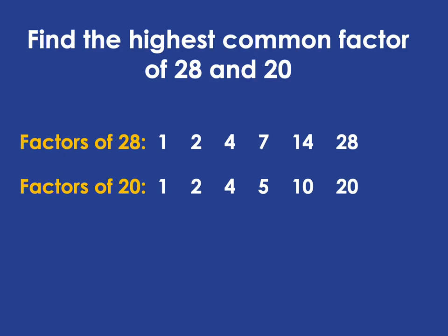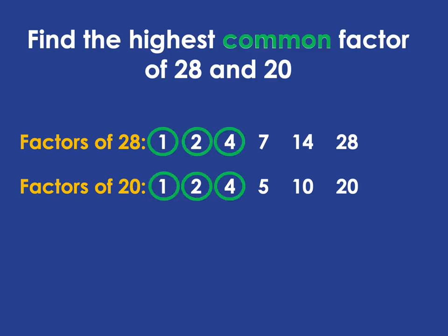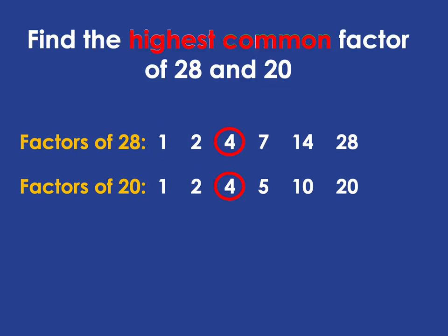Now we're in a place where we can start looking for the highest common factor. Remember, if we're talking about common factors of 28 and 20, we're talking about which factors of 28 are also factors of 20. Those are your common factors. But we don't just want the common factors — we want the highest, the biggest of them, and that will be 4. So the highest common factor of 28 and 20 is 4. It means the biggest whole number that can divide into both 28 and 20 with no remainder is 4.